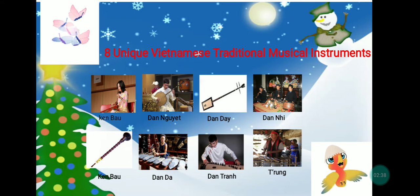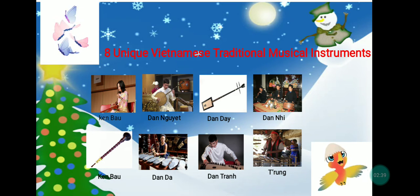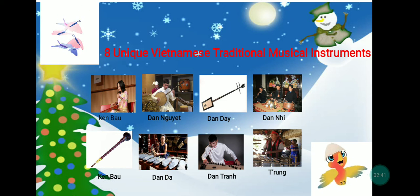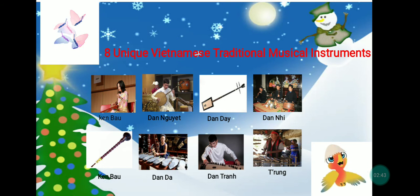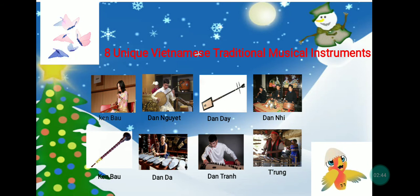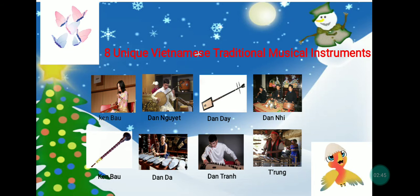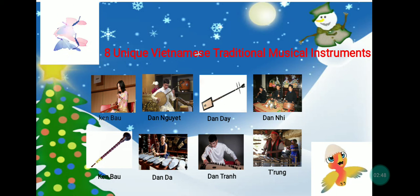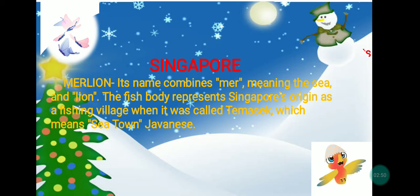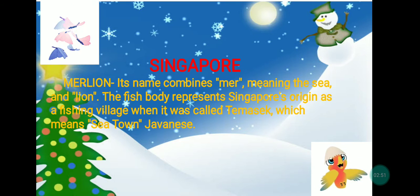The eight unique Vietnamese traditional musical instruments are: Dan Bau, Dan Nguyet, Dan Day, Dan Nhi, Kin Bau, Dan Tranh, and Trong. Those are the eight unique Vietnamese traditional musical instruments.